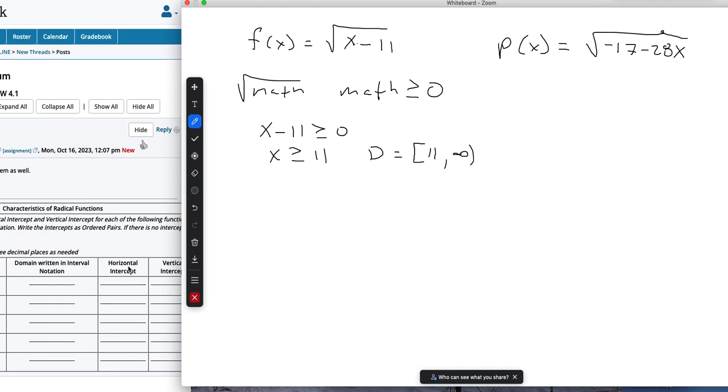To find the horizontal intercept, we let y equal 0, or the output, which is basically what I just did here. 0 equals x minus 11. We add that over and we get x equals 11. So that means x is 11 when the output, f of x, or I'll think of it as y in terms of ordered pairs, is 0.